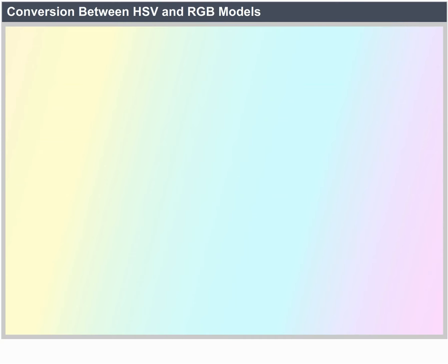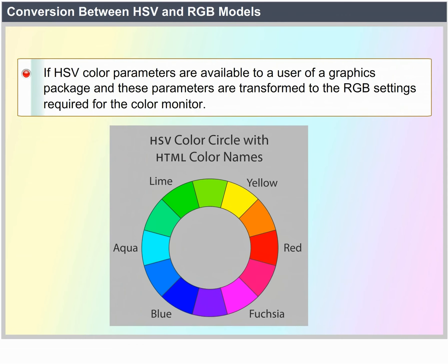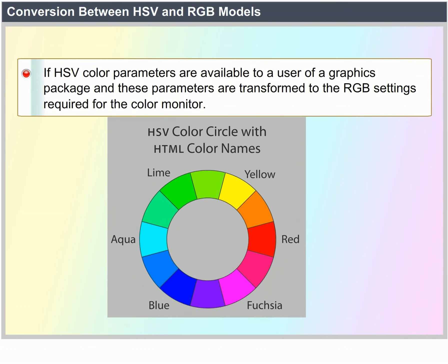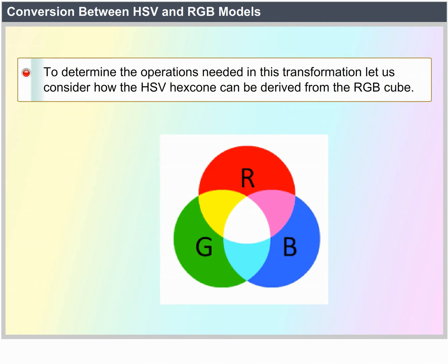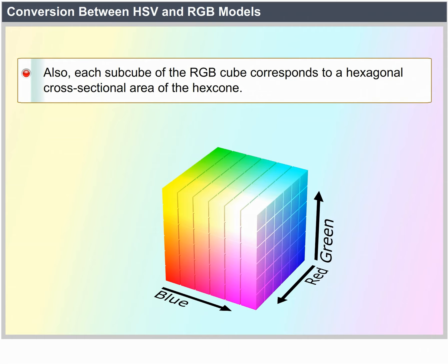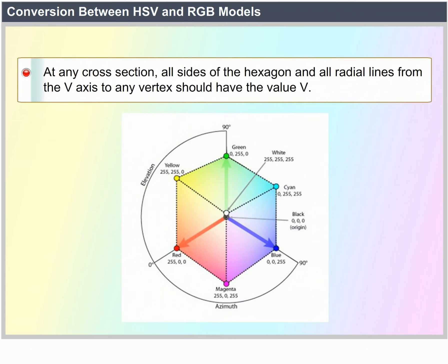Conversion between HSV and RGB models. If HSV color parameters are made available to a user of a graphics package, these parameters are transformed to the RGB settings needed for the color monitor. To determine the operations needed, we first consider how the HSV hex cone can be derived from the RGB cube. The diagonal of the cube from black at the origin to white corresponds to the V axis of the hex cone. Each subcube of the RGB cube corresponds to a hexagonal cross-sectional area of the hex cone. At any cross-section, all sides of the hexagon and all radial lines from the V axis to any vertex have the value V.